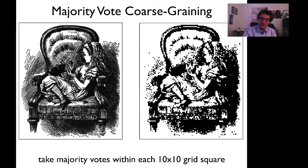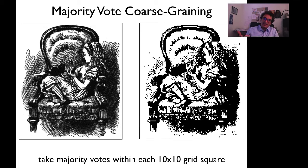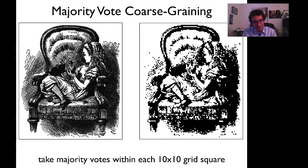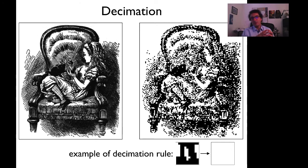So what happens when we do that? Here's an example of majority vote coarse-graining. On the left-hand side we have the original image, and on the right-hand side we have something that kind of looks pretty much like what Alice looks like, but we're missing quite a lot. Here's another case, and this is a different rule. In this case, instead of taking the majority vote, I did what's called — at least in the literature — decimation.